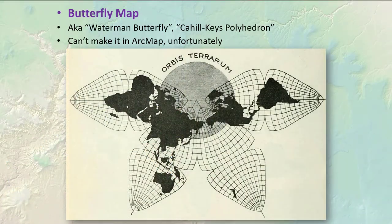The Waterman butterfly, also called the Cahill-Keyes, is a famous projection just because it is so aesthetically interesting — it is a pretty coordinate system. Unfortunately, ArcMap doesn't have this as an option.